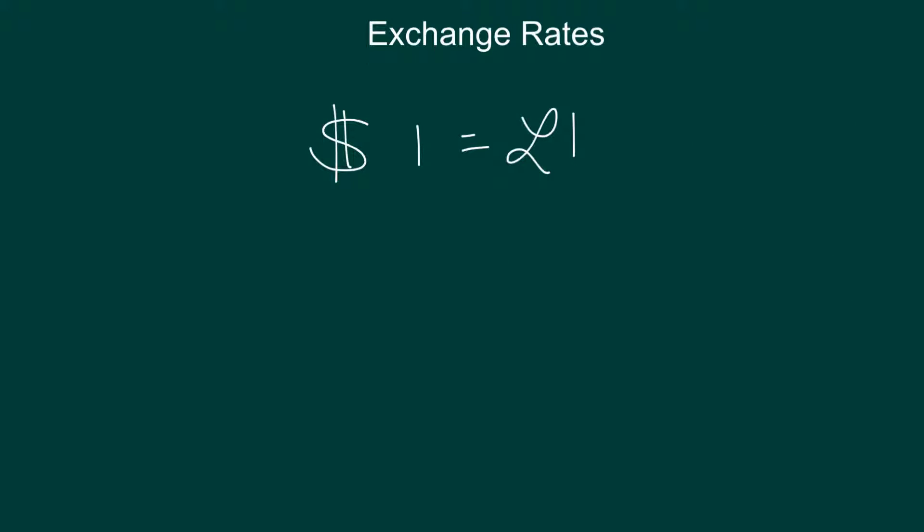Another thing we want to understand when looking at exchange rates is how they're changing in relationship to each other. We're going to look into all the reasons why they might change, but right now we just want to understand how to interpret a change. So let's say we're starting with one dollar equals one pound, that's a British pound, and then some things change, and the new exchange rate today is one dollar and fifty cents is equal to one pound.